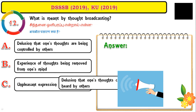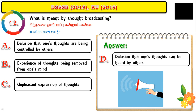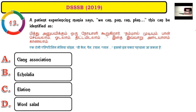Question number twelve: what is meant by thought broadcasting? The correct answer is: the delusion that one's thoughts can be heard by others. The person believes their thoughts are audible to someone else, or that a satellite is viewing their thoughts and broadcasting them in the media.